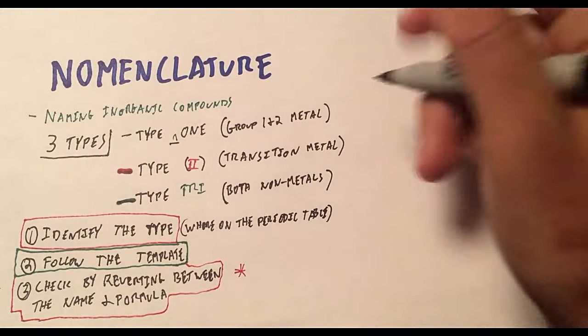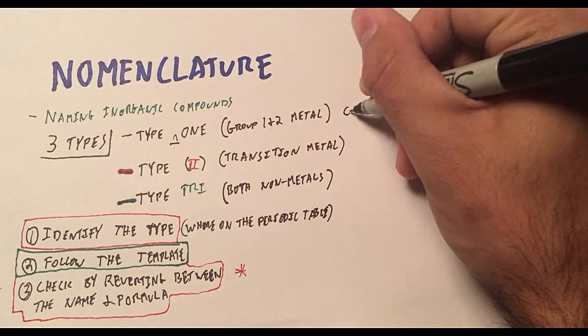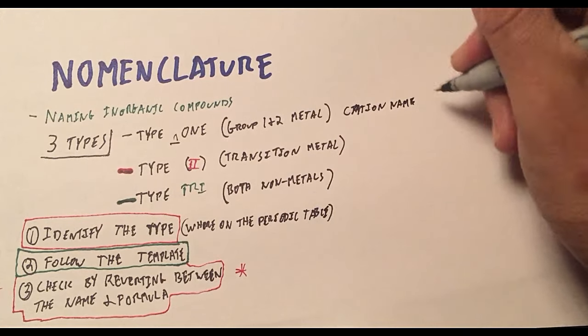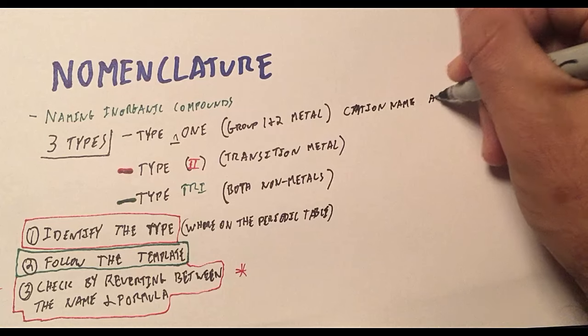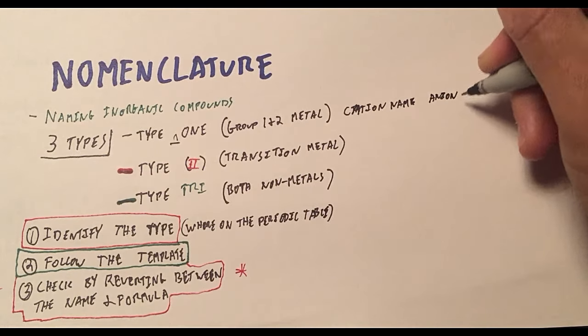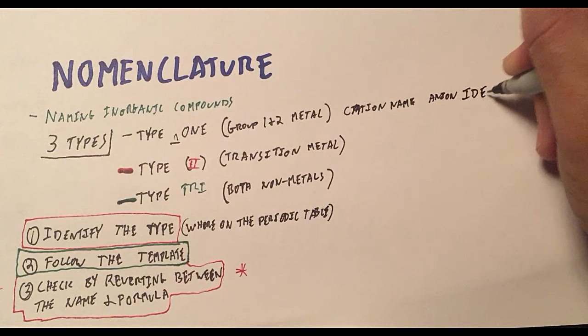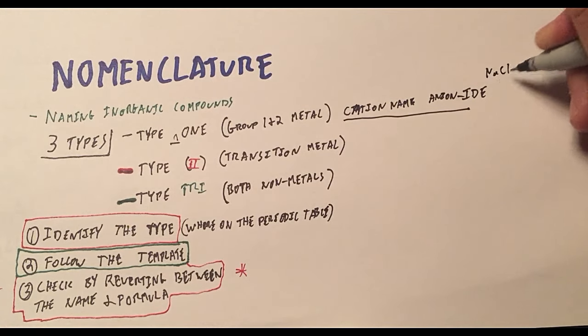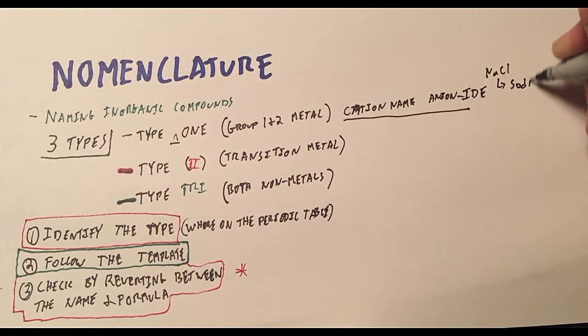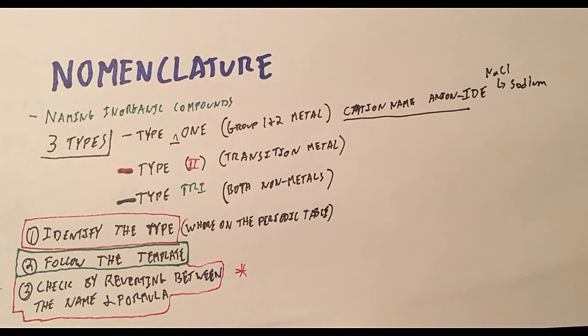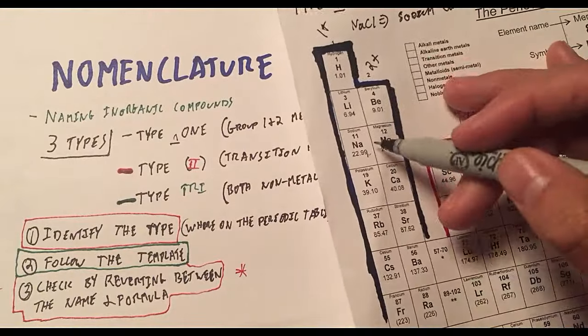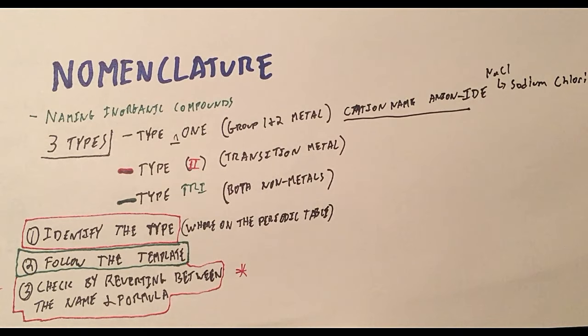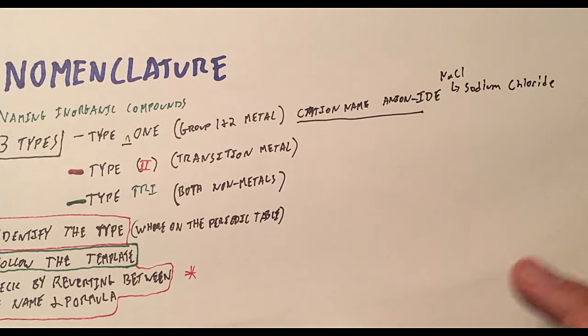So let's show the template. We have the cation name, space, and then we put the anion and we end it with the ending -ide. So for example, something like NaCl would be sodium, and that's the cation name, the positively charged species that we're dealing with. So sodium positive +1, sodium chloride. That's all. That's it. That's how easy it is when it's Type 1.